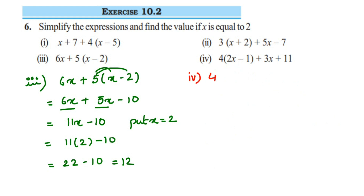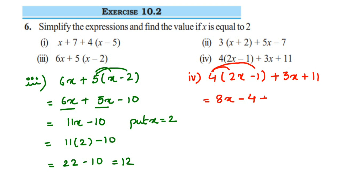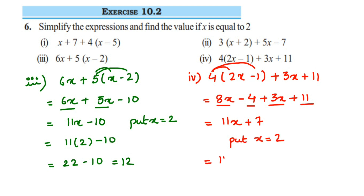The last expression is 4 into (2x minus 1) plus 3x plus 11. Open the bracket: 4 into 2 is 8, so it becomes 8x, minus sign, and 4 into 1 is 4, plus 3x plus 11. Add the like terms: 8x plus 3x is 11x. And minus 4 plus 11 gives 7. So we got 11x plus 7. Now substitute x equal to 2: 11 into 2 plus 7, which is 22 plus 7, which is equal to 29.